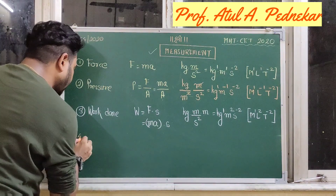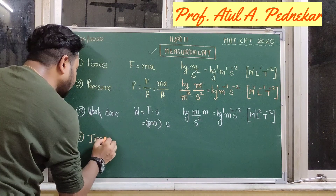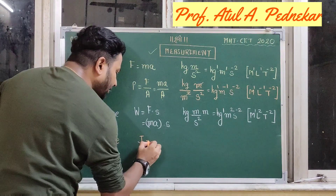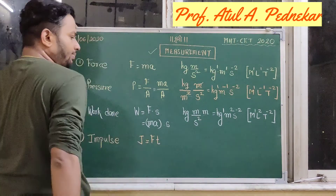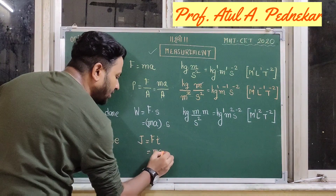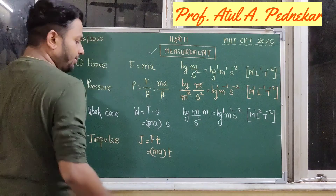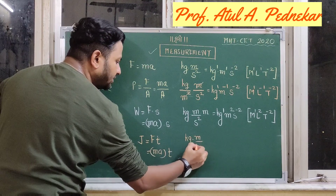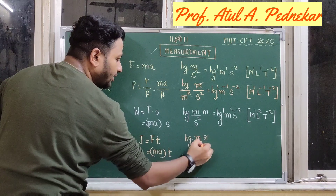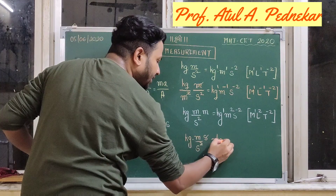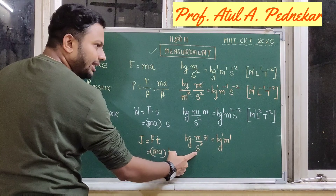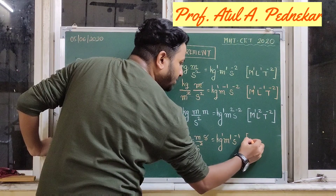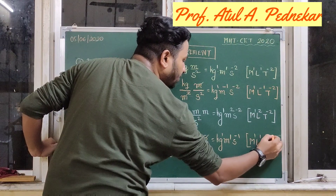The fourth quantity is impulse, denoted by the letter J. Impulse is calculated as force multiplied by time — that is mass into acceleration multiplied by time. The unit for mass is kilogram, acceleration is meter per second square, and time is measured in seconds. One second cancels. So we write kg raised to 1, meter raised to 1, S raised to minus 1. The dimensions are M1, L1, and T to the power of minus 1.